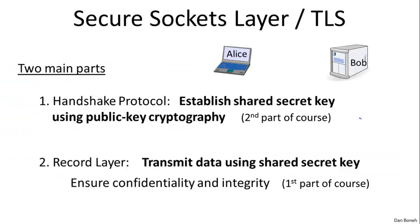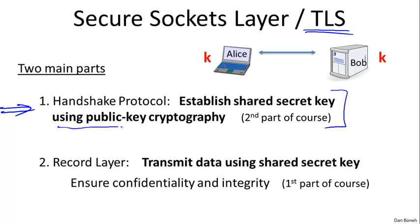The protocol used to secure web traffic, called TLS, actually consists of two parts. The first part is called the handshake protocol, where Alice and Bob talk with one another, and at the end of the handshake, a shared secret key appears between the two of them. Both Alice and Bob know this secret key, but an attacker looking at the conversation has no idea what the key K is. The way you establish this secret key — the handshake — is using public key cryptography techniques, which we're going to talk about in the second part of the course.